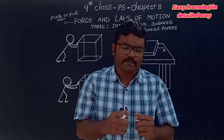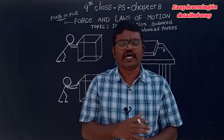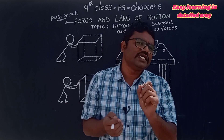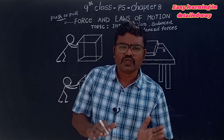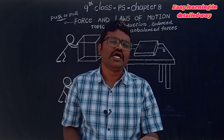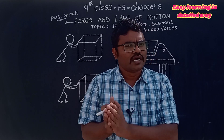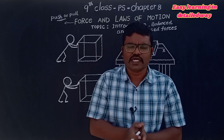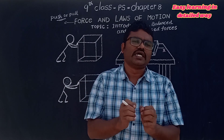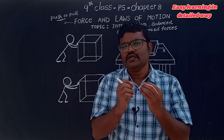For example, with a cycle, when you stop pedaling, it comes to a rest position. Because of the frictional force acting on the tires of the bicycle from the road, the surface of the road offers a force which is called friction. Friction applies in the opposite direction, causing the cycle to stop.